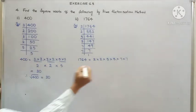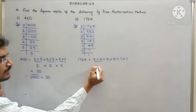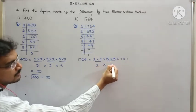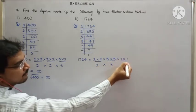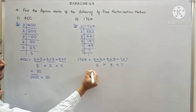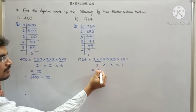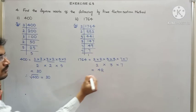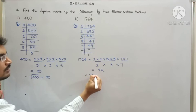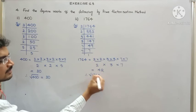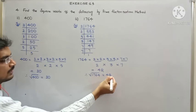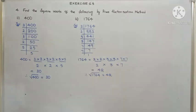So, 1764 can be factorized as 2 times 2 multiplied by 3 times 3 multiplied by 7 times 7. Just like here. From this pair, we are going to take 1, 2 and from this pair, we are going to take 1, 3 and from this pair, we are going to take 1, 7. So, 2 times 3 is 6, 6 times 7 is 42. Therefore, square root of 1764 equals 42.